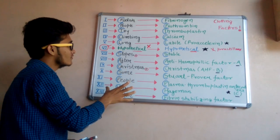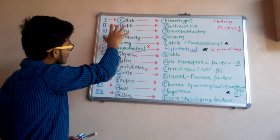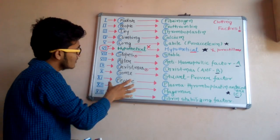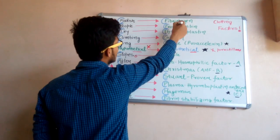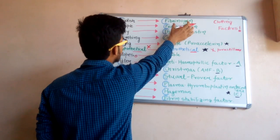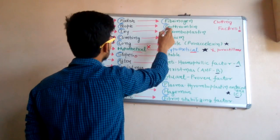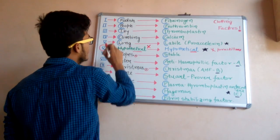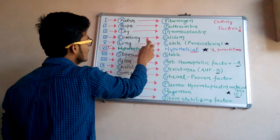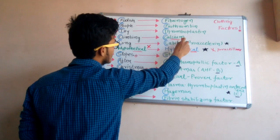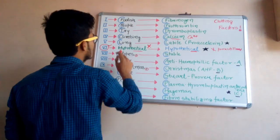This is the sequence of the clotting factors, which is very important in the coagulation cascade. You have to memorize this sentence in sequence. 'F' in 'Foolish' means fibrinogen, which is clotting factor number one. 'P' in 'people' means prothrombin, number two. 'T' in 'try' means thromboplastin, number three.